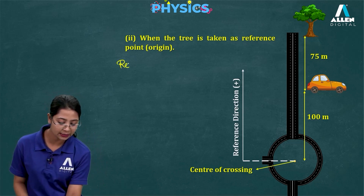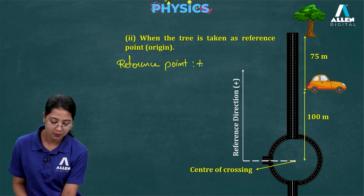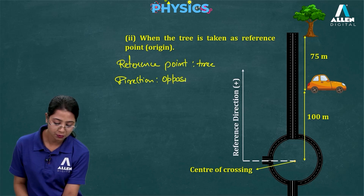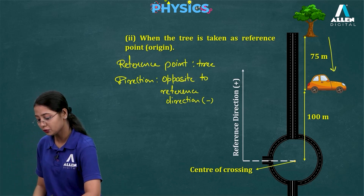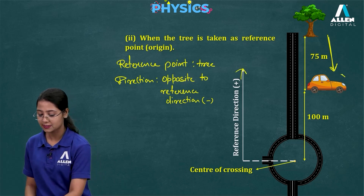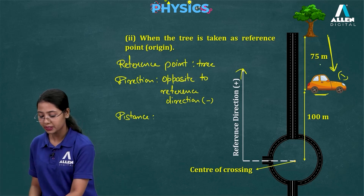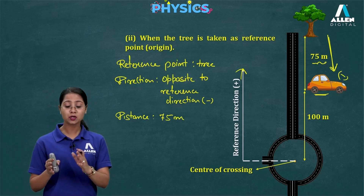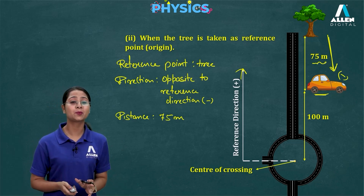Second, when the tree is taken as the reference point: the reference point has changed to the tree. The direction from tree to car is opposite to the reference direction, so the direction is negative. The distance of the car from the tree is 75 meters, so we write 75 meters with a negative direction. So these three points are described here. You can clearly observe that if the reference point changes, the distance and direction both change — confirming that the reference point is very important.